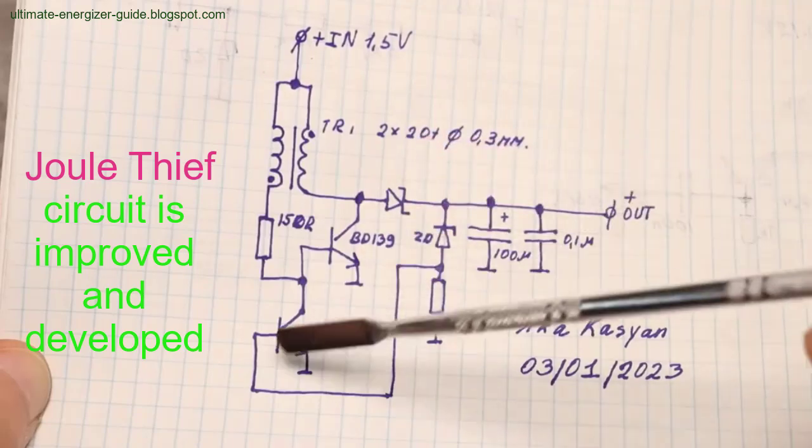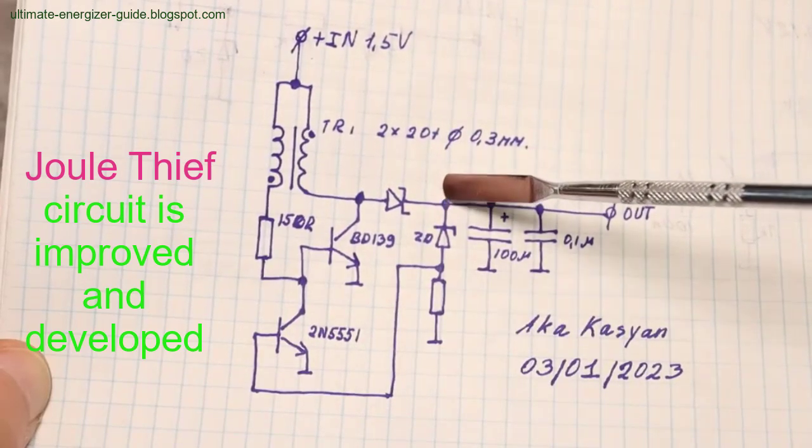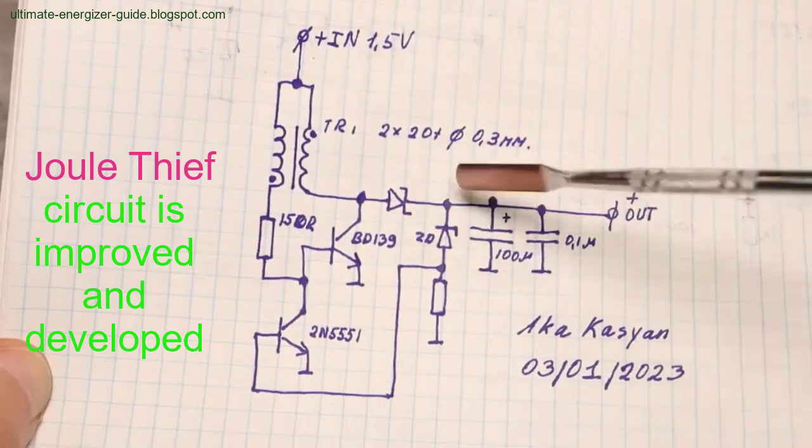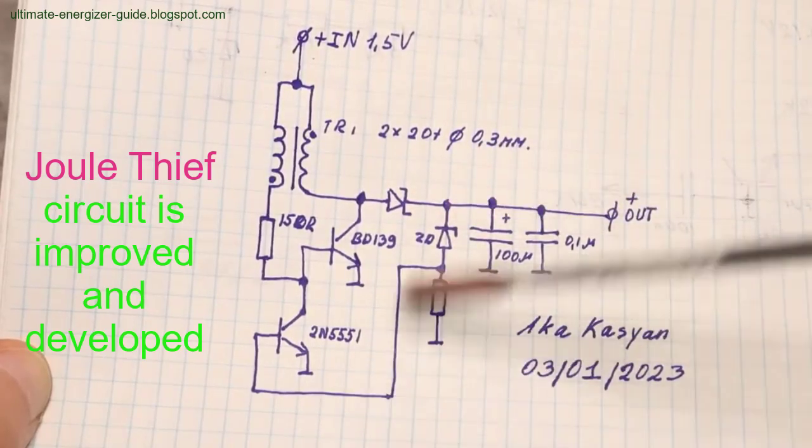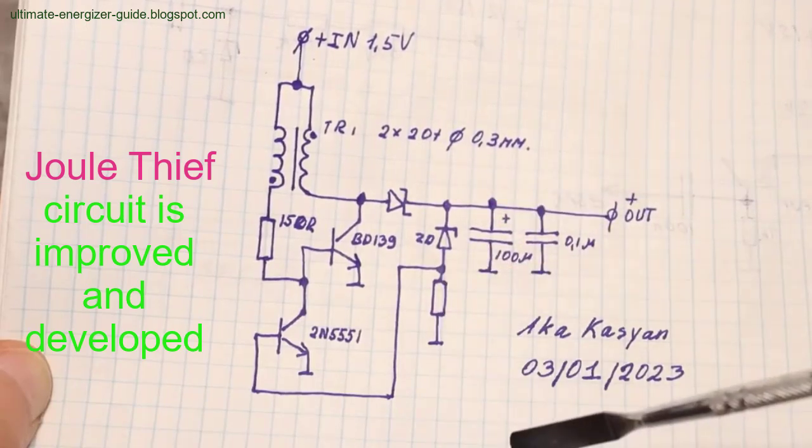The implications of this free energy are profound. The Joule Thief circuit could potentially reduce household electricity bills by up to 98 percent or even eliminate them entirely. By utilizing more batteries and inverters for storage and conversion, households could achieve complete electrical independence.